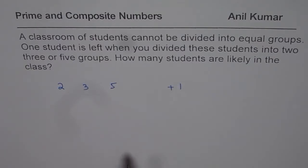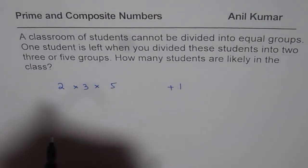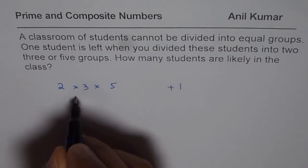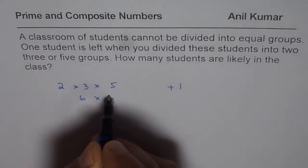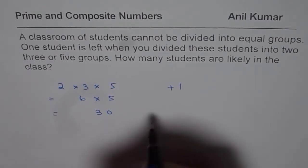The easy way to find the number of students is to multiply two, three and five. Two times three is six. Six times five is thirty. So we get thirty.